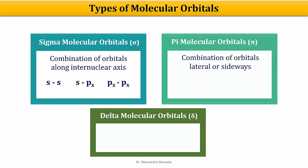When the combining atomic orbitals overlap laterally or sideways, we have the formation of pi molecular orbitals. The atomic orbitals involved can be PY-PY, PZ-PZ, a P and a D orbital, or two D orbitals. The delta molecular orbital can be formed by the combination of two D orbitals.